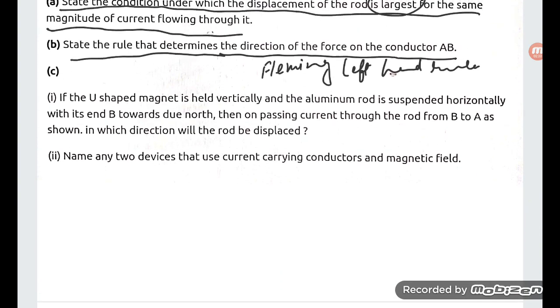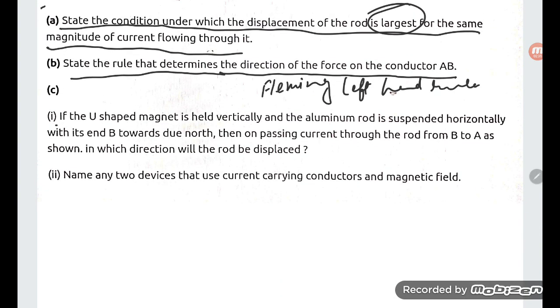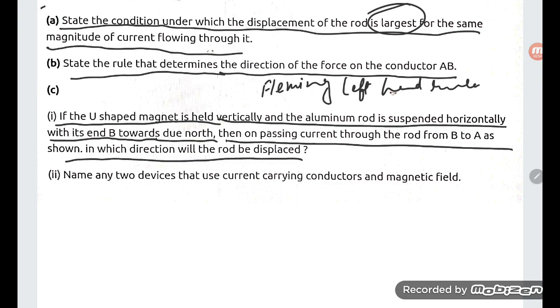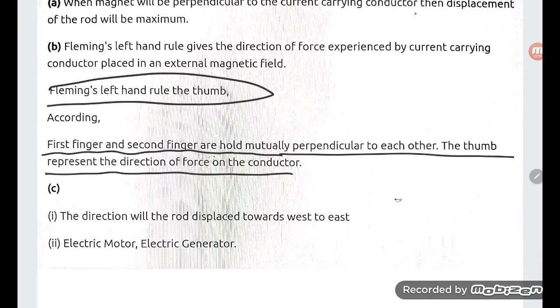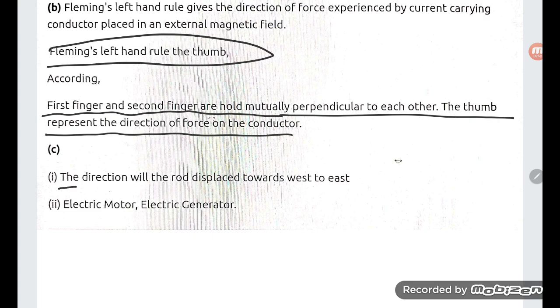If the U-shaped magnet is held vertically and the aluminum rod is suspended horizontally with its end B towards due north, then on passing current through the rod from B to A as shown, in which direction will the rod be displaced? So if you talk about the direction, the rod will be displaced from west to east.